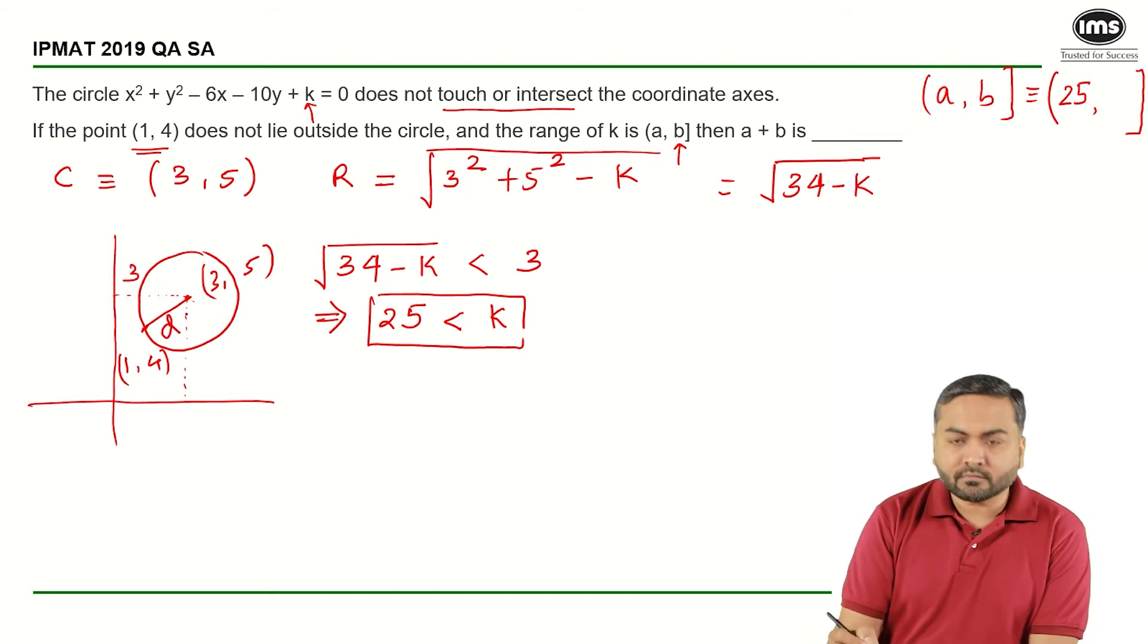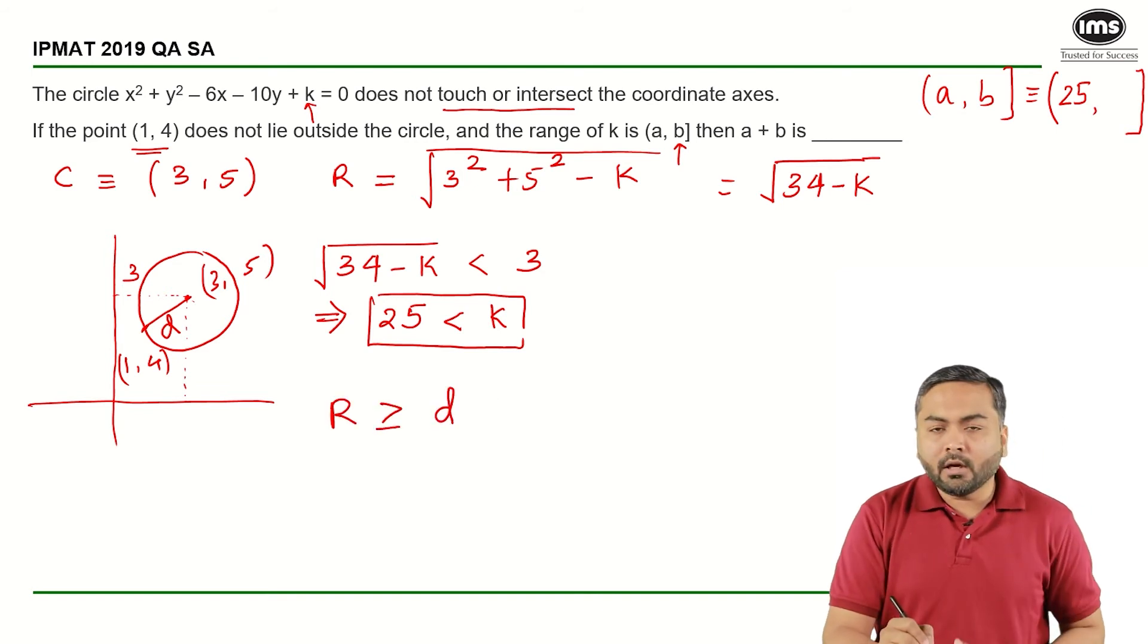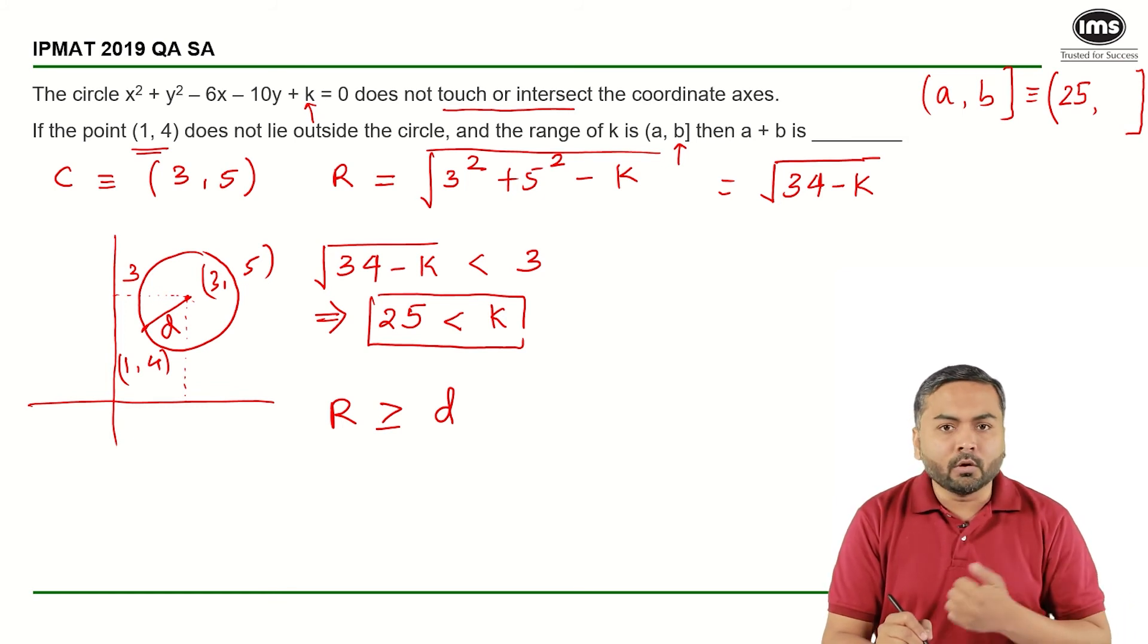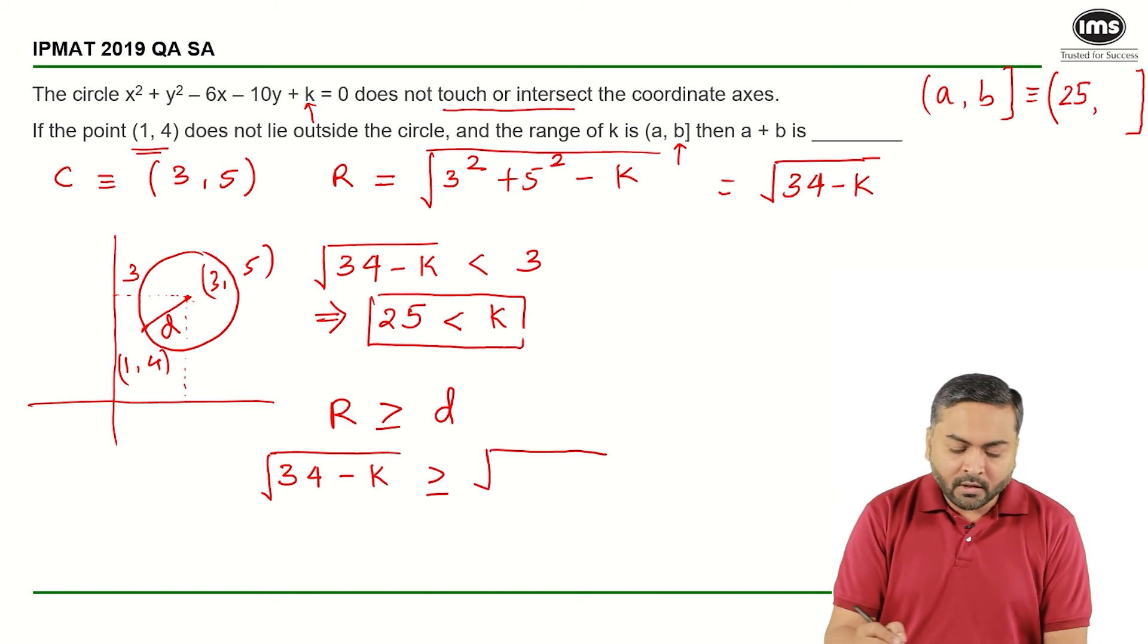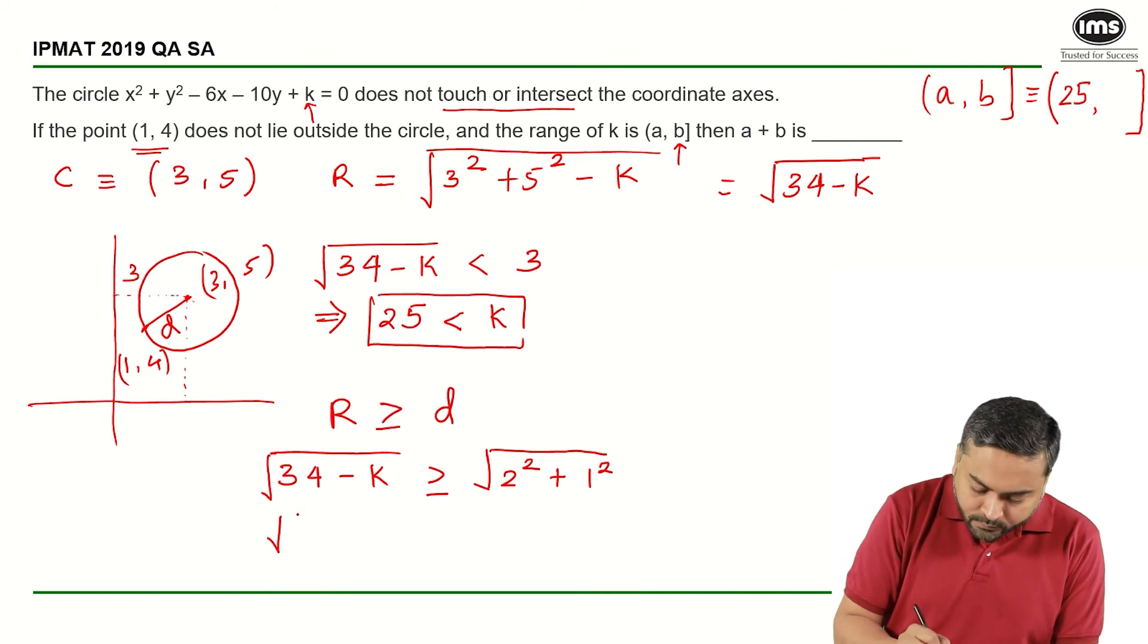So this distance d, the radius should be greater than or equal to this distance d. If the point lies inside the circle, the radius will be greater than the distance. If the point lies on the circumference, then the radius will be equal to the particular distance. So the radius, that is root of 34 minus k, should be greater than or equal to the distance. How do we find the distance here? It is 3 minus 1 (that is 2) whole square plus 5 minus 4 (1) whole square. So basically I get root 5, root of 34 minus k is greater than or equal to root 5.